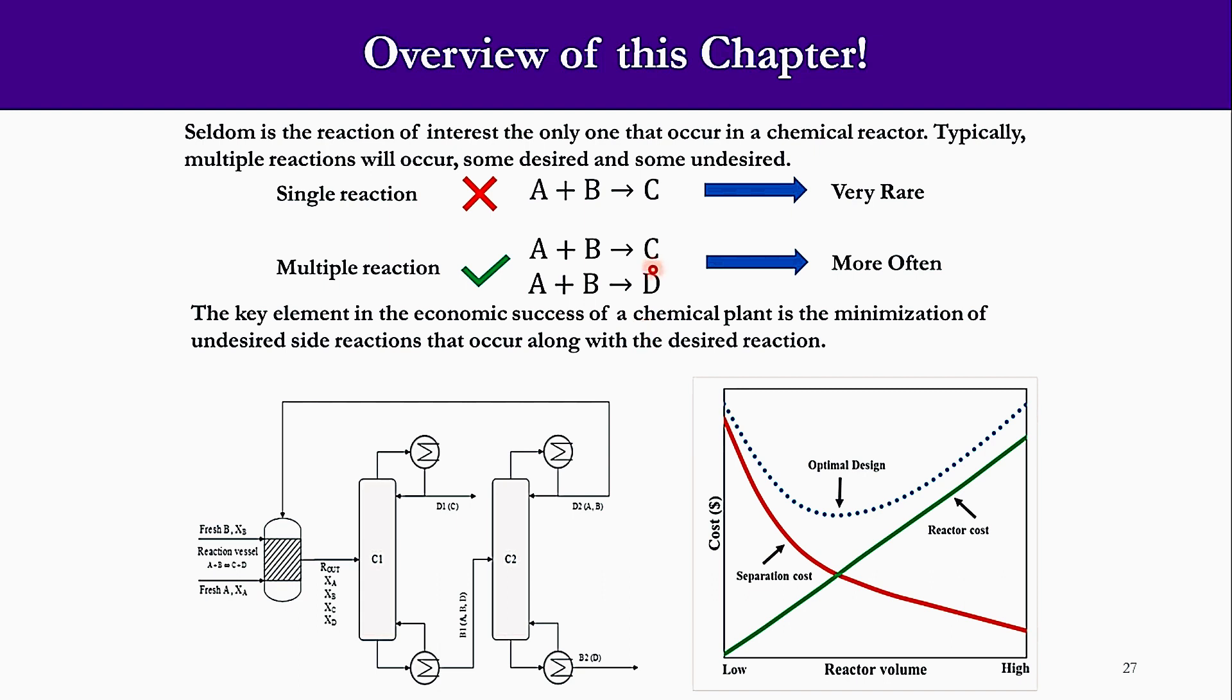As I have said, if C is your desired product and D is your undesired product, economically and feasibly, C should be produced more in this reaction and D in less quantity. If you do not consider D and if you do all calculations on C, then the calculations will remain incomplete.